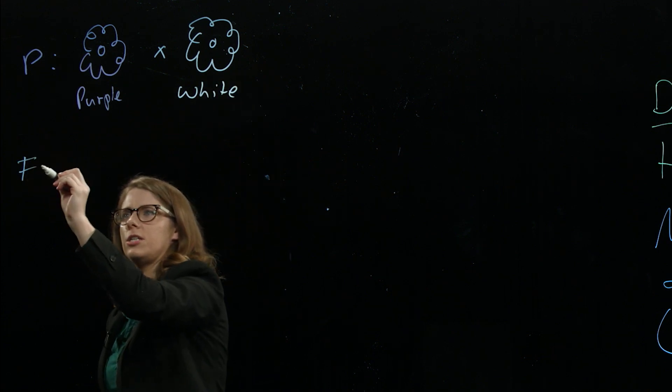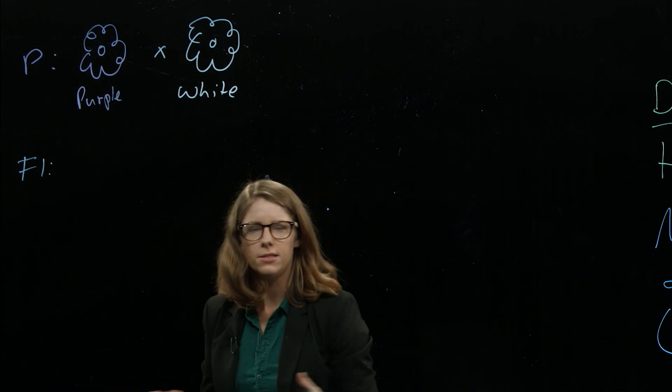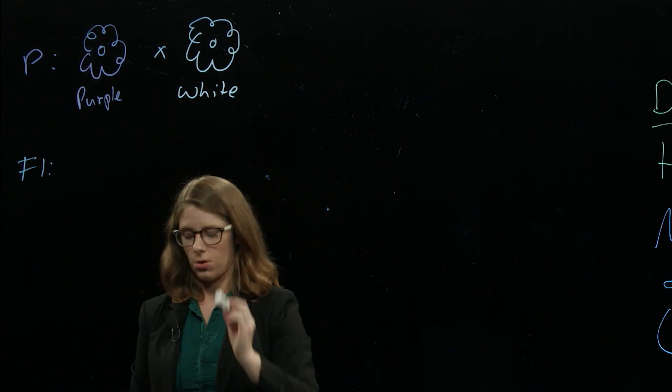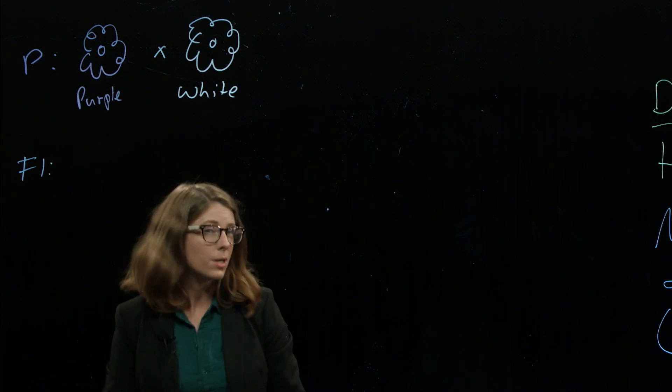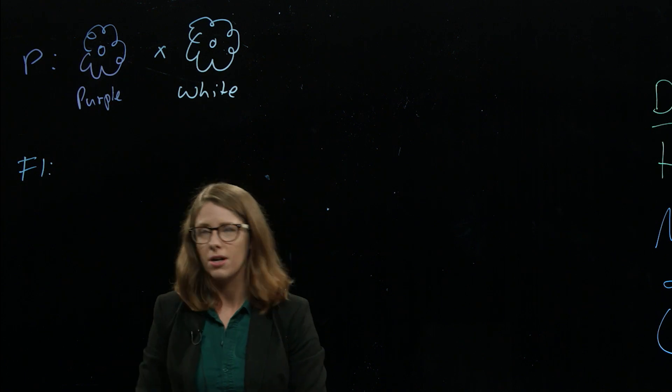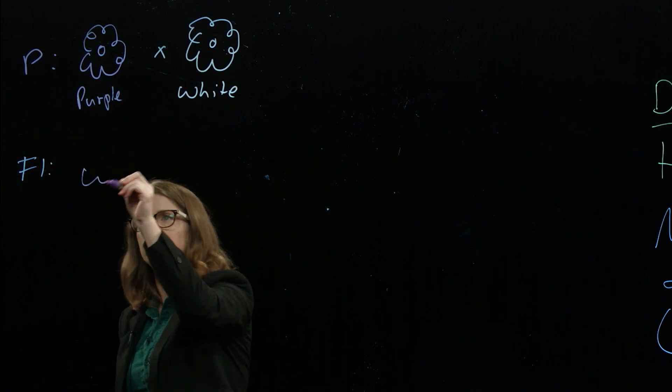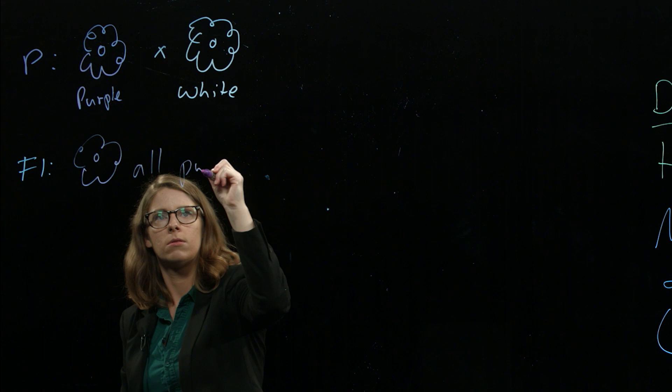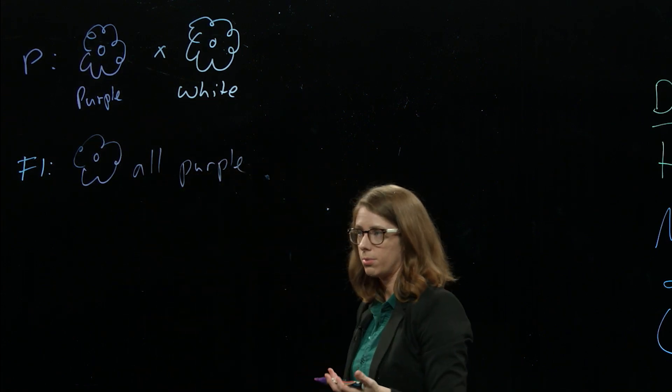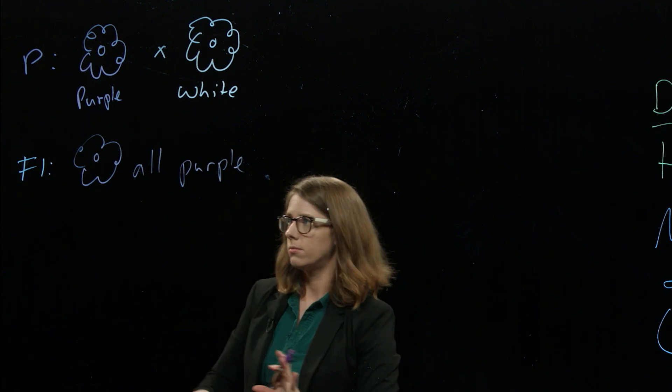So the next generation is F1. The F means filial. It just means kids. The first kids. So what would you expect to see if you cross a purple flower with a white flower? Maybe like light purple, would you expect? Would you expect some kids to look like that parent, some to look like that parent? It's actually not what he saw at all. They were actually all purple.